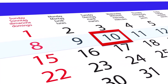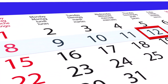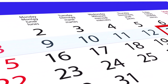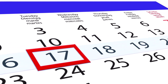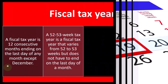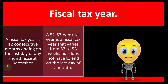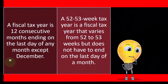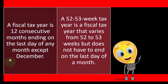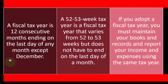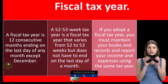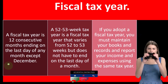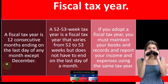We can define a year by basically 12 months. 12 months are not exactly even because they have different days within them. We could try to break it down into smaller increments of weeks. When you think about weeks in a year, there are either 52 to 53 weeks generally. If you adopt a fiscal tax year, you must maintain your books and records and report your income and expenses using the same tax year.